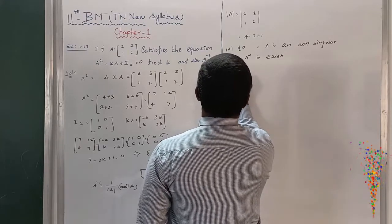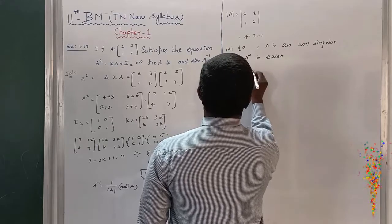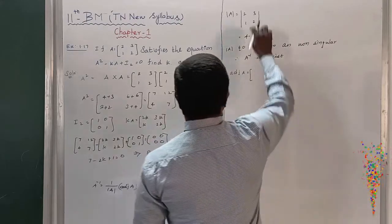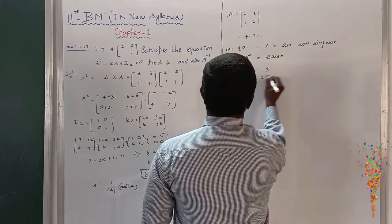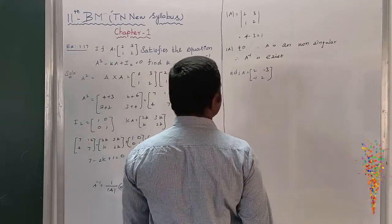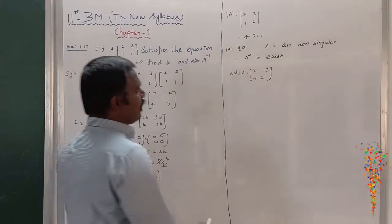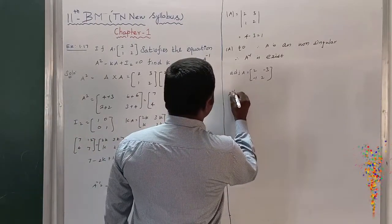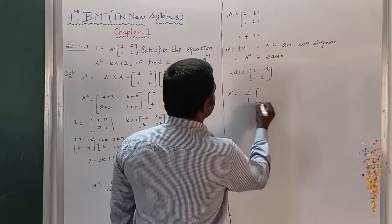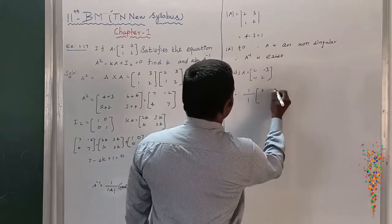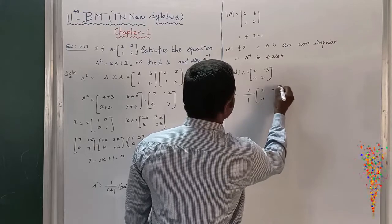Adjoint A by the 2 by 2 minor we should know. How to interchange these two terms 2 and 2, and change the sign of these two terms of second or first column, first or second column. Minus 3 and minus 1. A inverse = 1/1 × [[2,-3],[-1,2]].